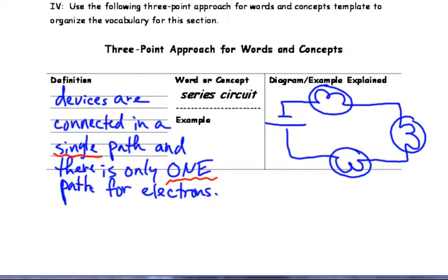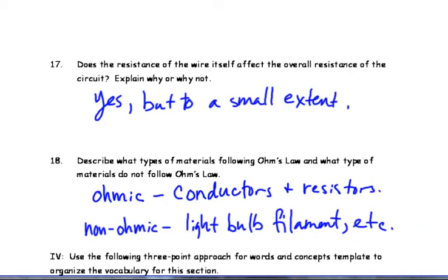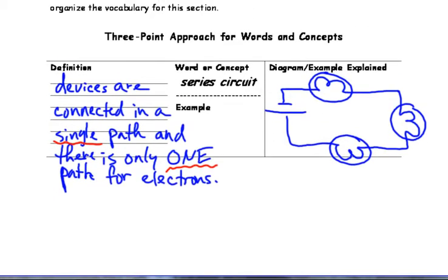Okay, lastly, vocab. Series circuit. Devices are connected in a single path. And there's only one path for electrons to go. So electrons have to go through this bulb, then this bulb, then this bulb, then they're back at the battery.